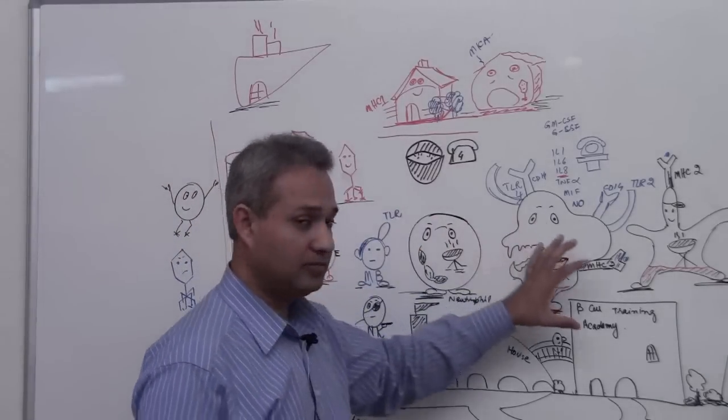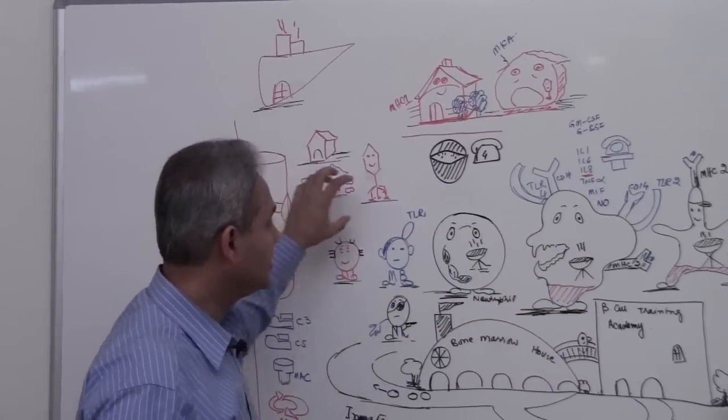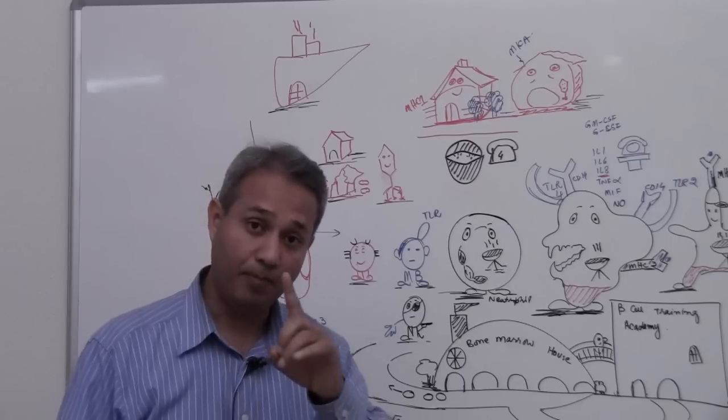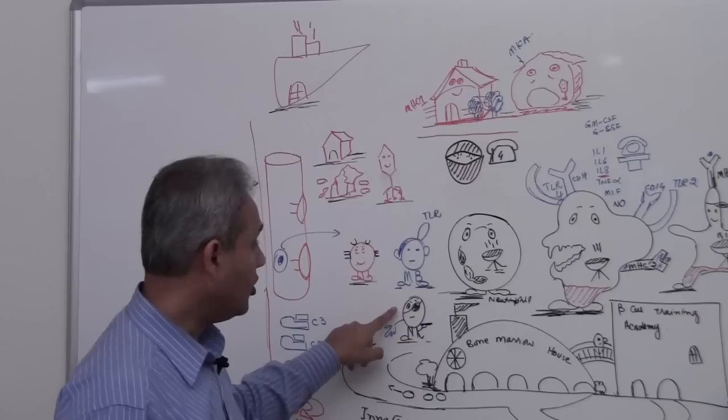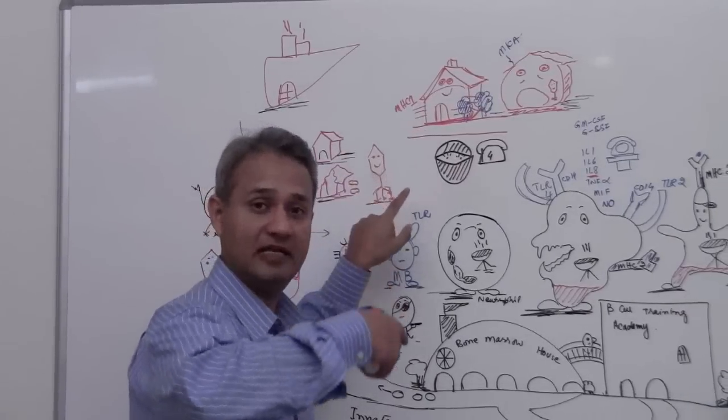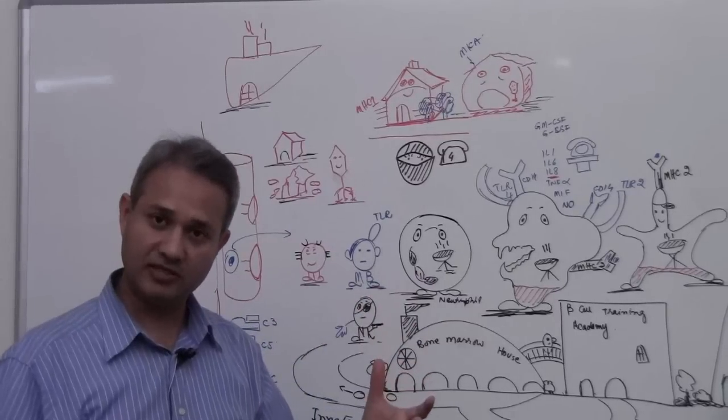So the innate system mostly tries to pick up pathogens which are sitting around in the streets and running around and causing problems, but innate system also has the capability of identifying the cells which are sick and eating them up or killing those cells.